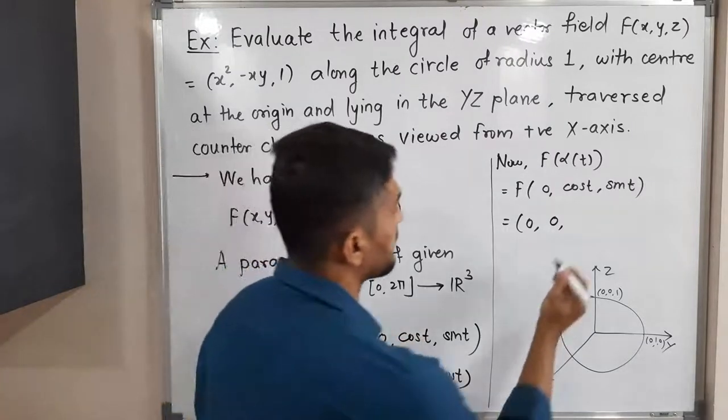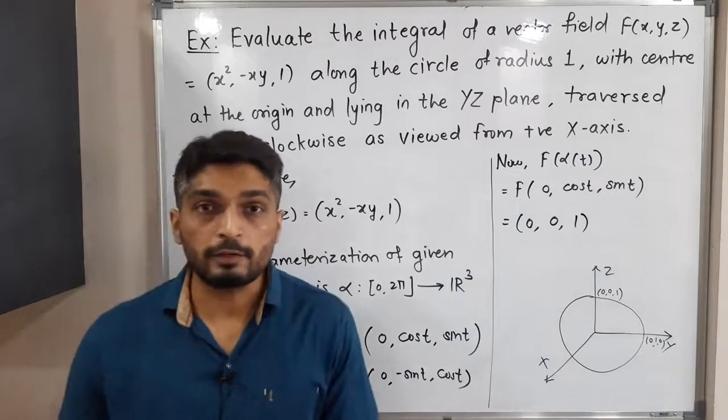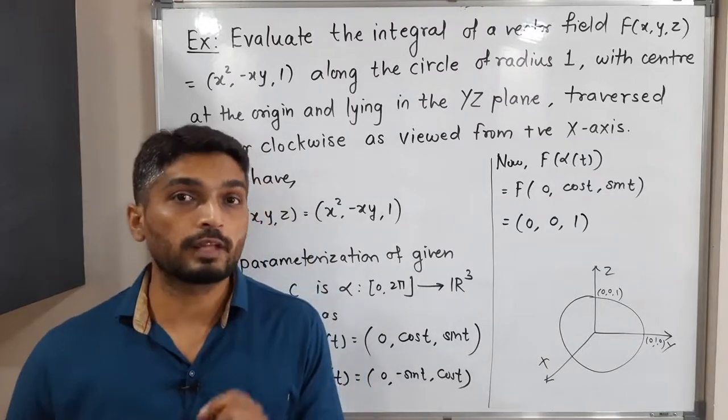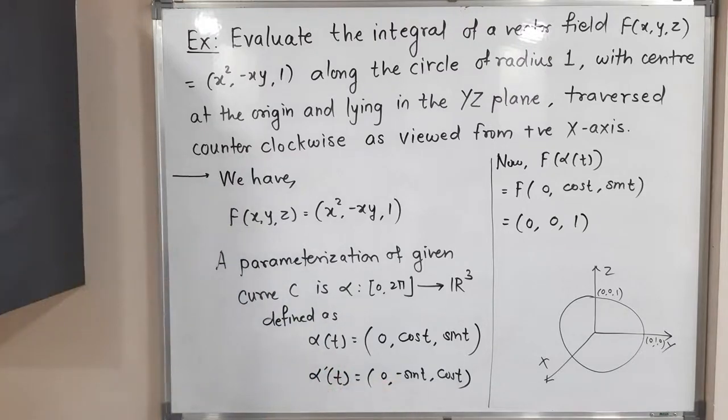So 0 into cos t, we will have 0. Last one, which is constant, it is fixed, so we'll have 1. So this is F(α(t)). After that, we will follow the definition of line integral of vector field and we will solve the problem. Make a screenshot of it first, then we will go further.